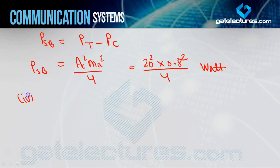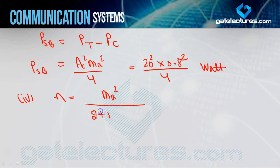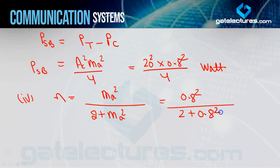The fourth question asks for efficiency. The formula is η = ma² / (2 + ma²). Substituting ma = 0.8: η = (0.8)² / [2 + (0.8)²]. From this you can calculate all the values — these questions are straightforward if you followed the last video, as they are purely formula-based.